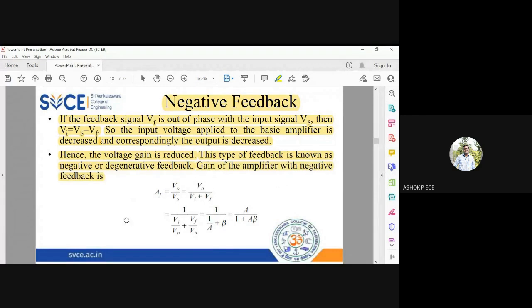AF is equal to V naught by VS. For VS, I will be going to this equation: VS equals VI plus VF. Now you see, same thing we are doing. VS equals VI plus VF. If you rearrange the terms, you get VI plus VF. Divide the numerator and denominator by V naught. So V naught by V naught is 1. VI by V naught is 1 by A plus VF by V naught is beta.